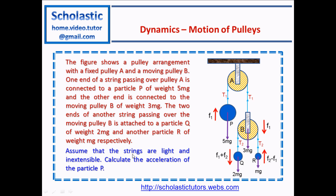Assume that the strings are light and extensible. Calculate the acceleration of particle P. In this diagram we indicate it as F1 — the acceleration of particle P going upwards. And since this string is connected to pulley B, the acceleration of pulley B is F1 downwards.